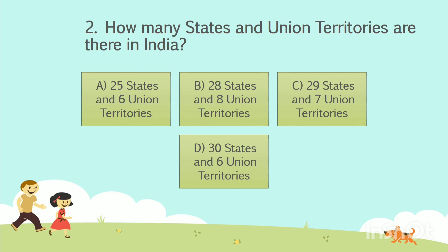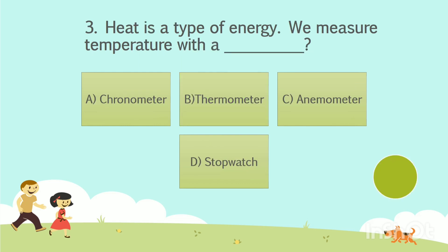The answer is Option B: 28 states and 8 union territories. Question number 3. Heat is a type of energy. We measure temperature with a dash. Option A: Chronometer. Option B: Thermometer. Option C: Animometer. Option D: Stopwatch. Your time starts now.